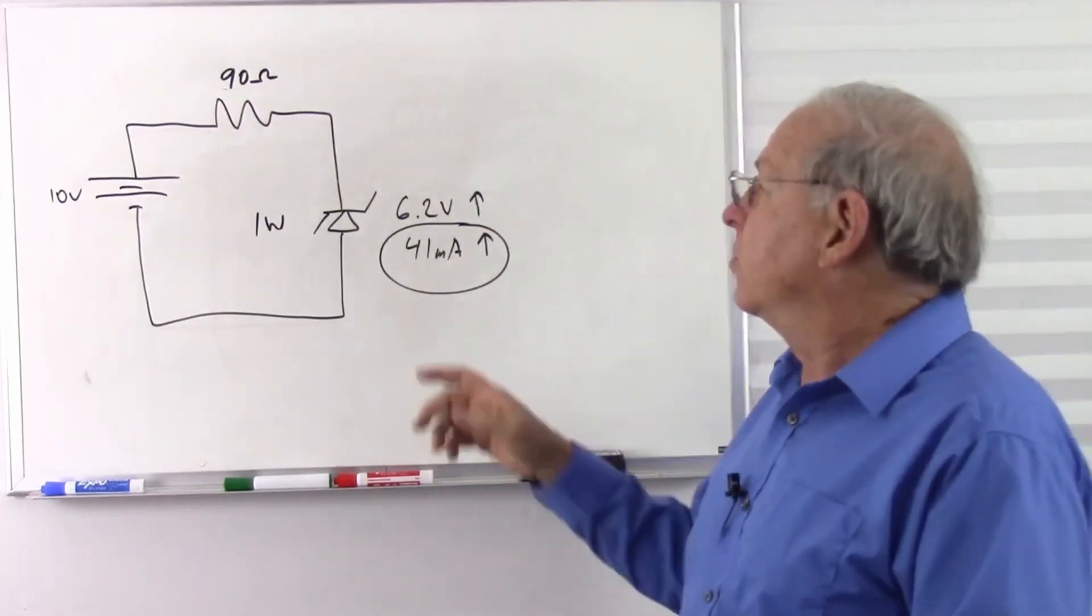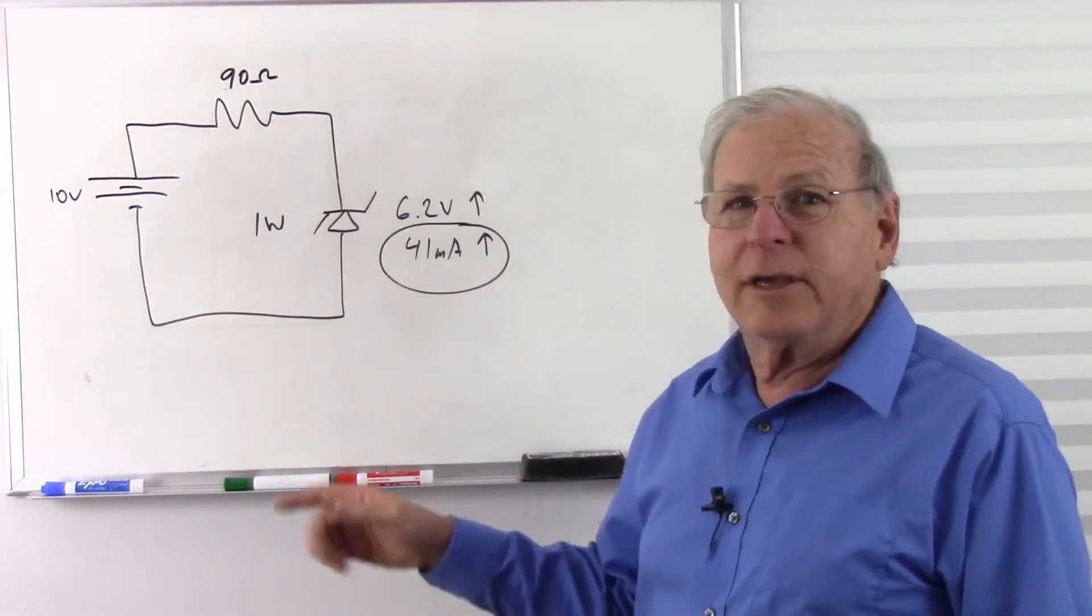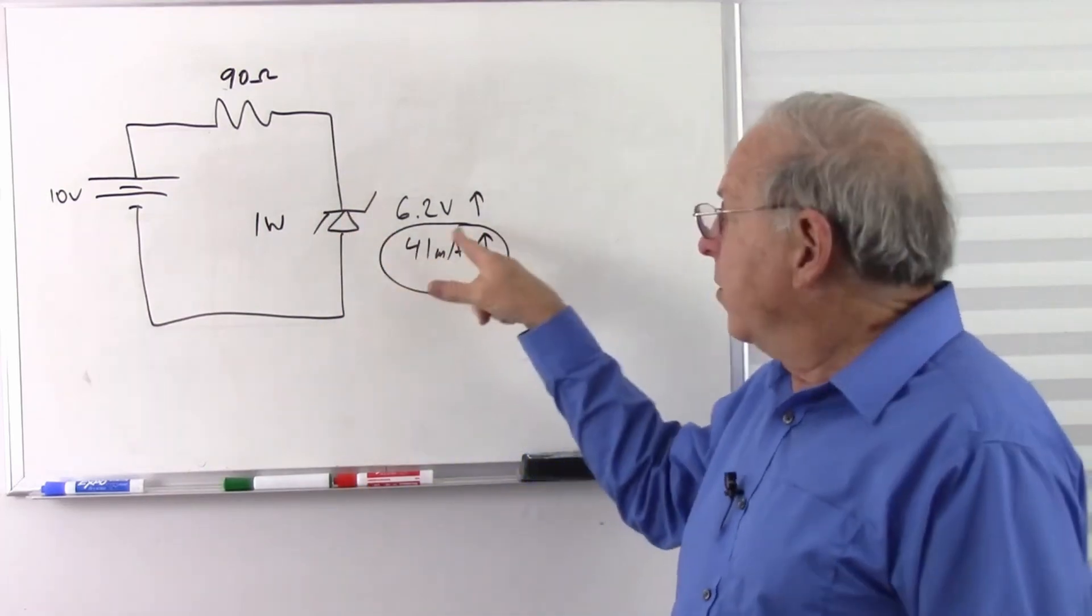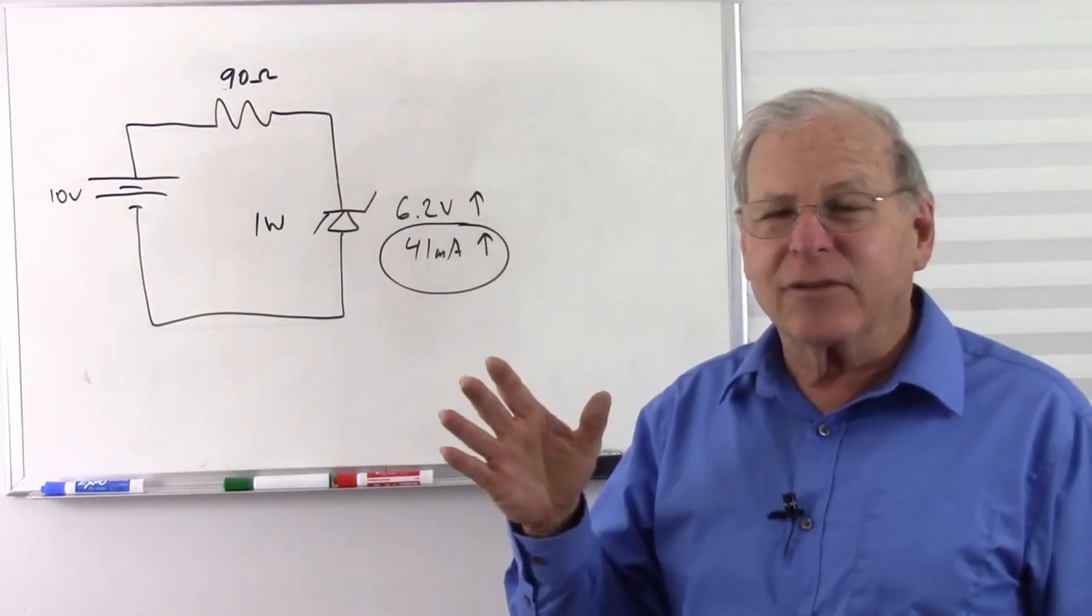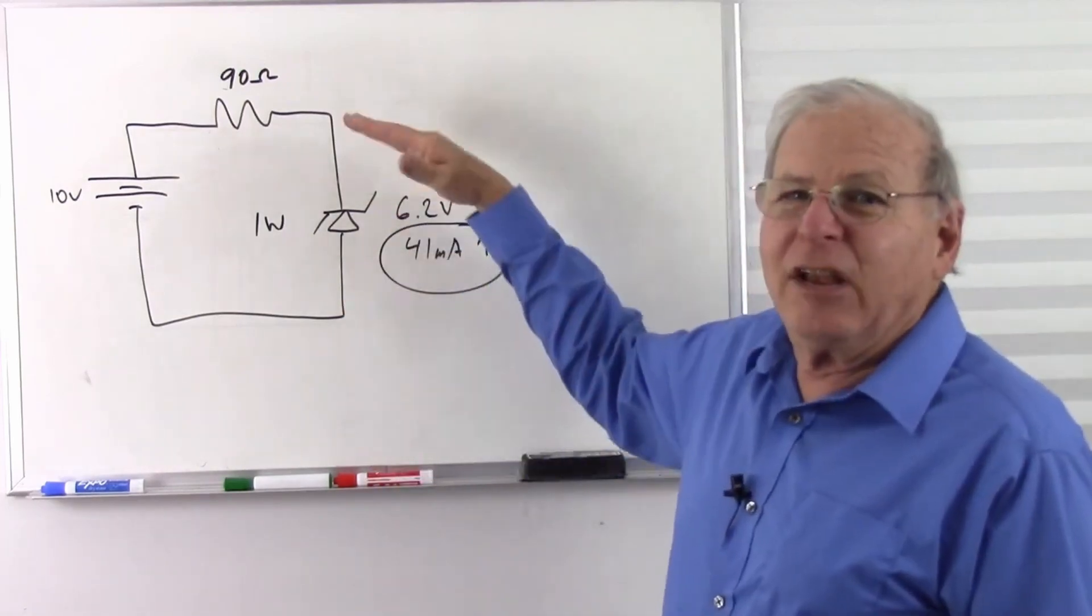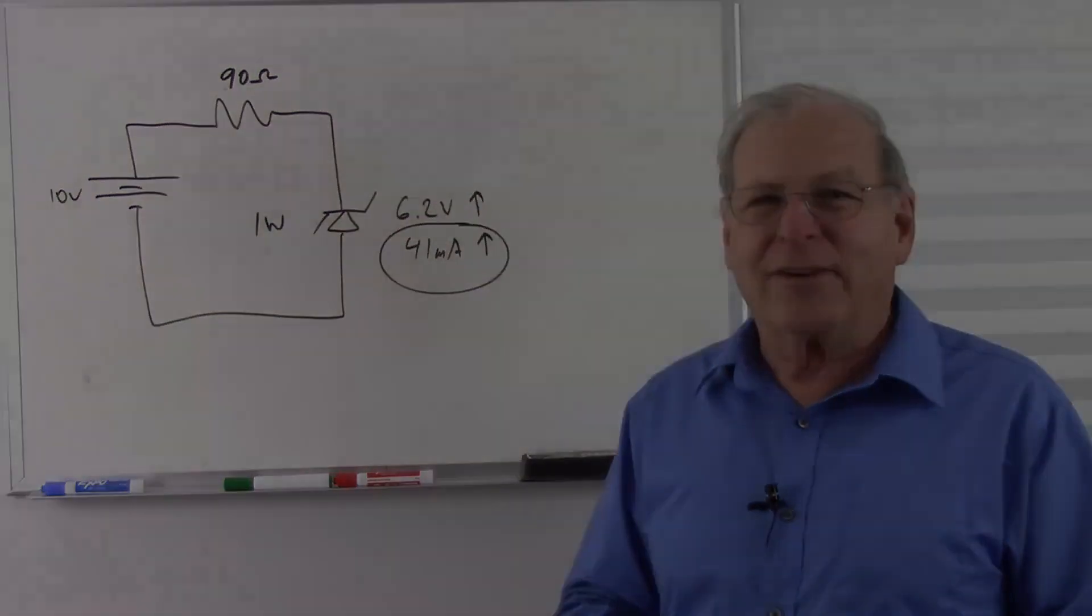That's why we don't design around a Zener diode to use its maximum current, because first of all, we don't get the voltage we want. And because of the heating that it does, it's going to be changing temperature all over the place, and the voltage is going to go all over the place. So there's your answer.